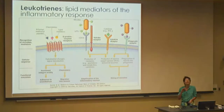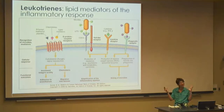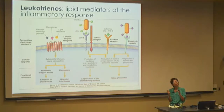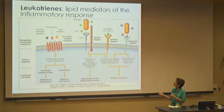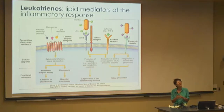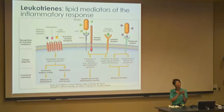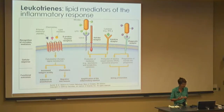Inflammation is a very important physiological response and there are many, many players in this process. The molecules we're interested in are known as lipid mediators. They are derived from arachidonic acid, they're synthesized by enzymes, and we're looking at those enzymes. One class of these lipid mediators is called leukotrienes. Once your body starts synthesizing these, they act as a chemoattractant, causing more neutrophils to come to that site, amplifying the swelling and bringing more neutrophils to consume invading bacteria.